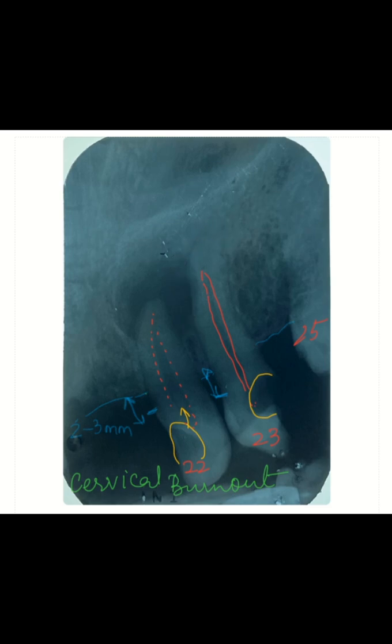Now we come to the periapical region. There's a very glaring pathology at the periapical of the tooth. Radiolucency at the periapical of the root — of which tooth? 2-2. So what type of radiolucency is this? Well defined. Well defined — why are we calling it well defined? There is a circumscribed area. Borders are sclerotic — you can make out and define the borders very clearly.